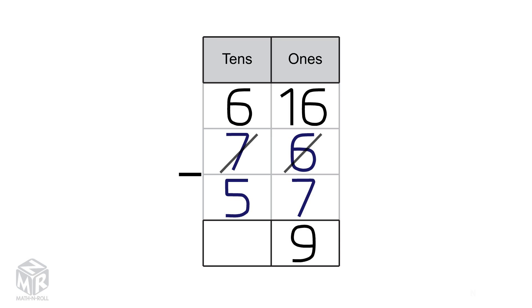Next, we subtract the 10s: 6 minus 5 equals 1. So 76 minus 57 equals 19.